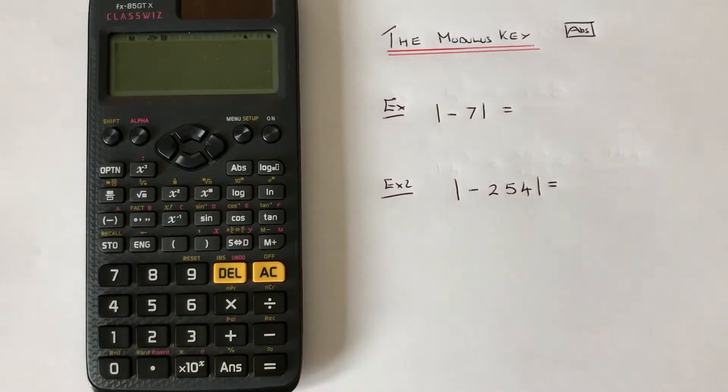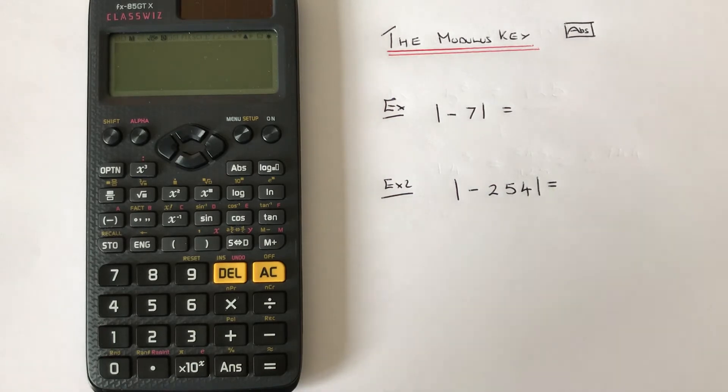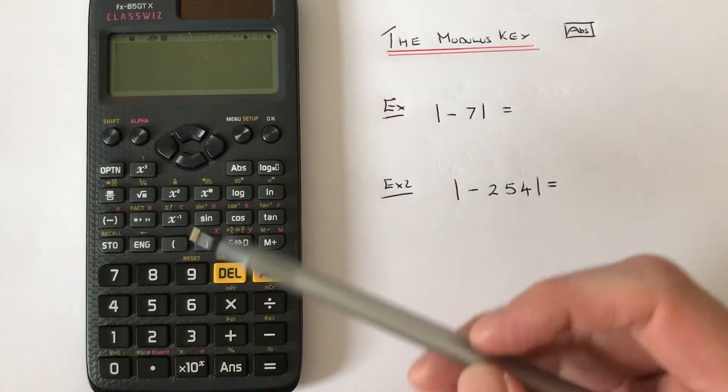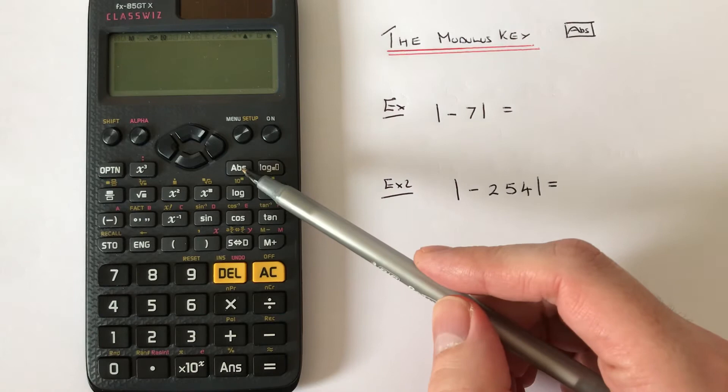Hi guys, welcome back. This is Math 3000. Today I'm going to show you how to use the modulus key on a Casio Classwiz scientific calculator. The modulus key can be found on the first row of the scientific functions.